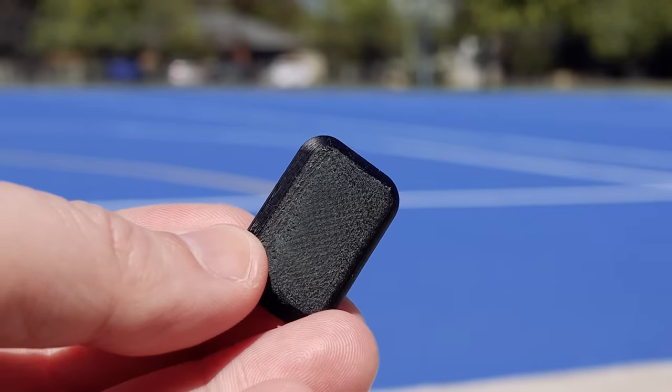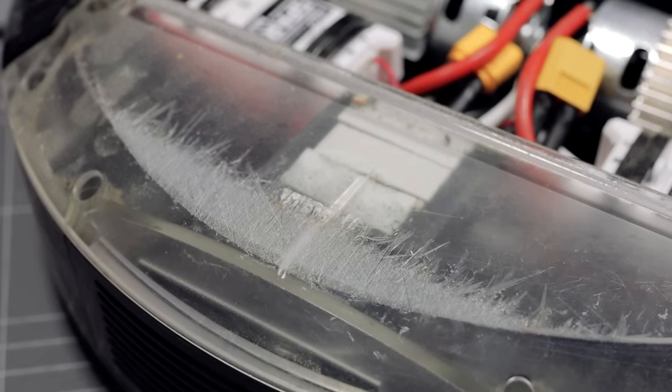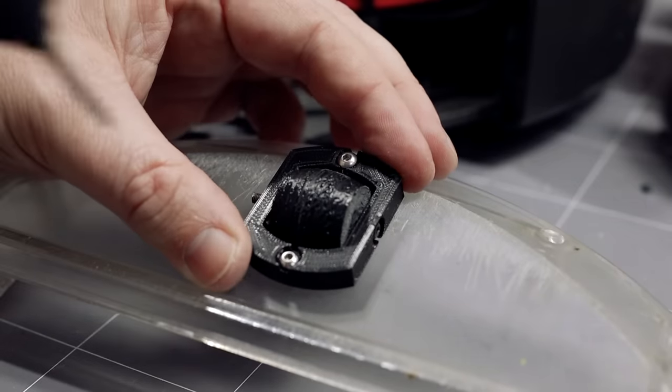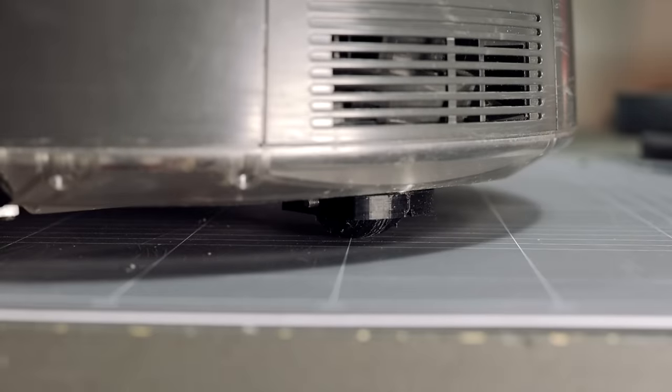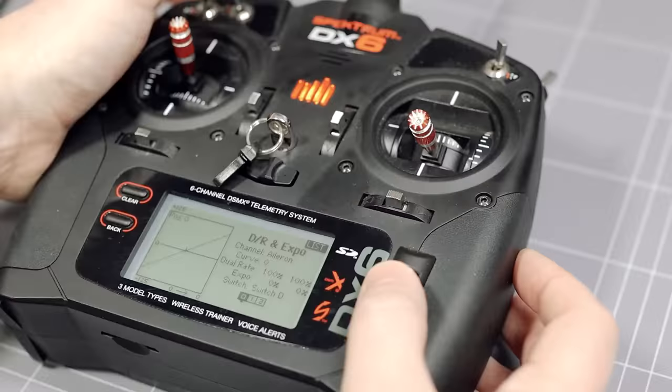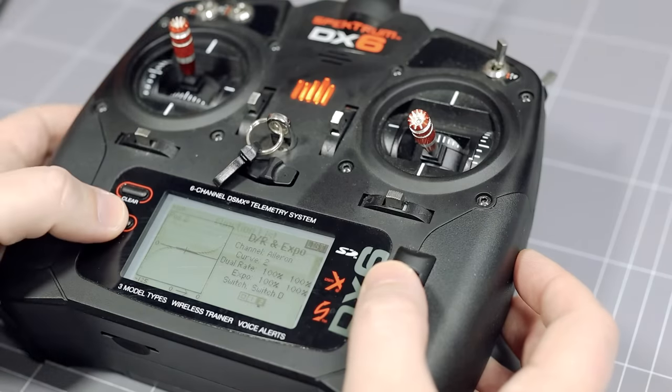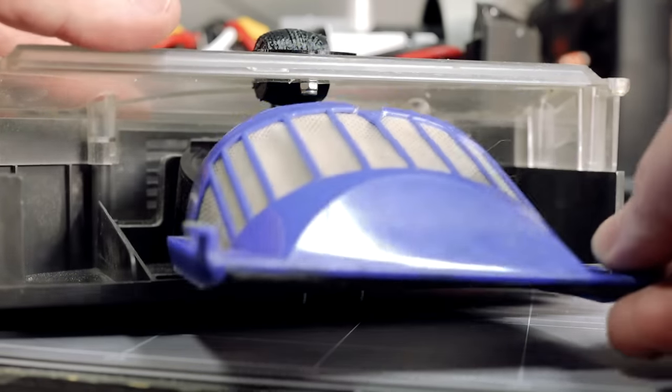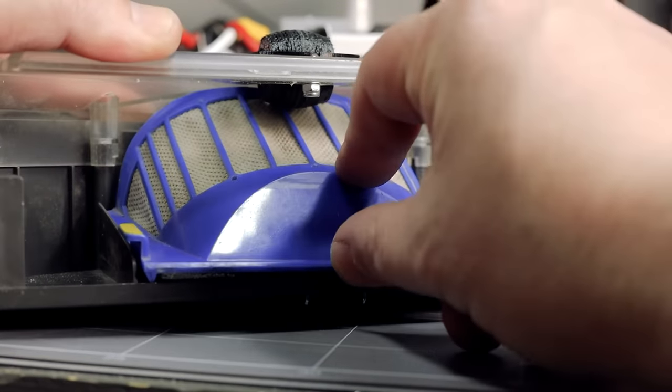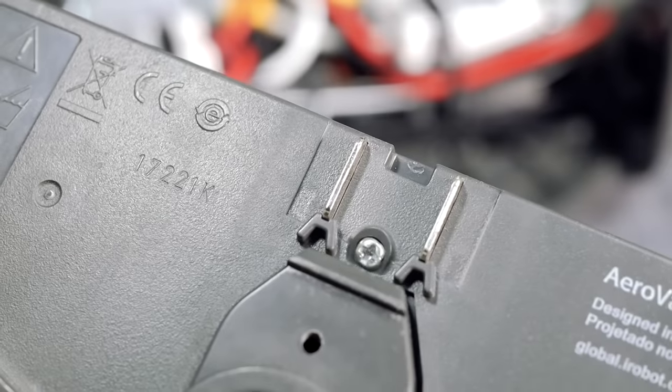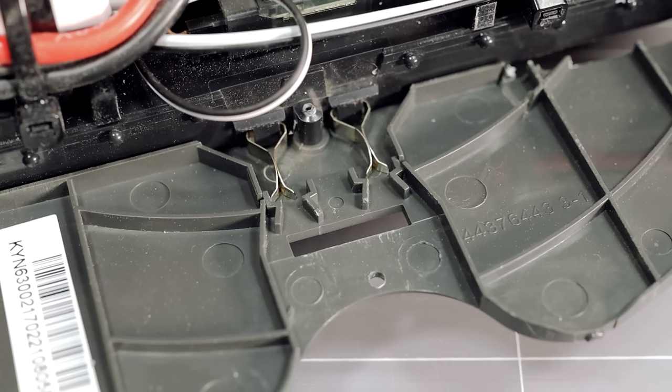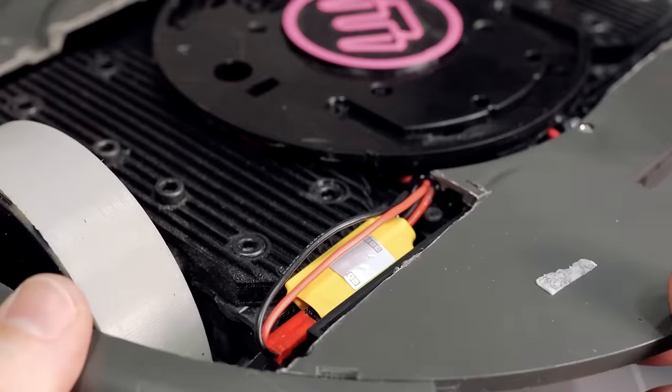Next up I needed to get those wheelies under control. And to improve the handling I added some different exponential settings. Oh, and you may have noticed that the Roomba doesn't suck yet. So using the existing power rails I wired up the rear sucker and front sweeper to a switch on the receiver.